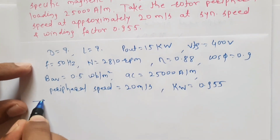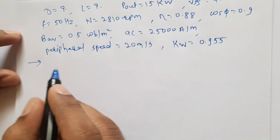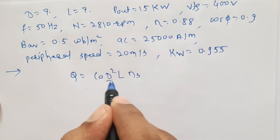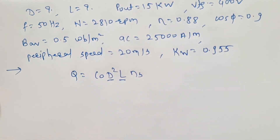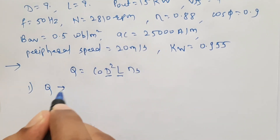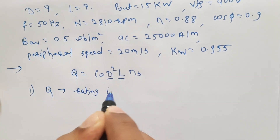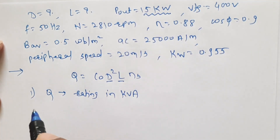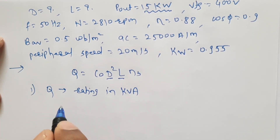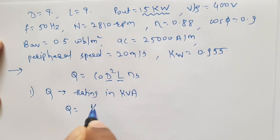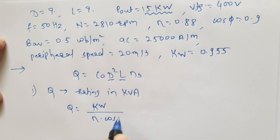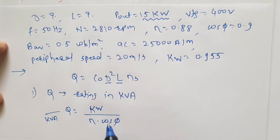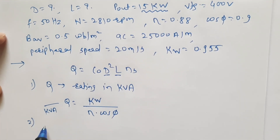Now we will understand how to solve the problem. We know the output equation of induction motor: Q equals C0 into D-squared L into Ns. Since we have to find D and L, the main dimensions of the motor, the first step is to find Q. Q is the rating of the motor in KVA, but in the given data the motor output is given in 15 kilowatt.